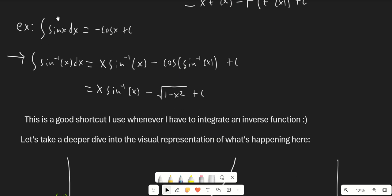An example: we know that the integral of sine of x dx is negative cosine x plus c, and the integral of inverse sine of x is x inverse sine of x plus negative cosine of sine inverse of x plus c. With some algebraic simplification this becomes x inverse sine of x minus square root 1 minus x squared plus c. This is the shortcut I use whenever I have to integrate an inverse function.